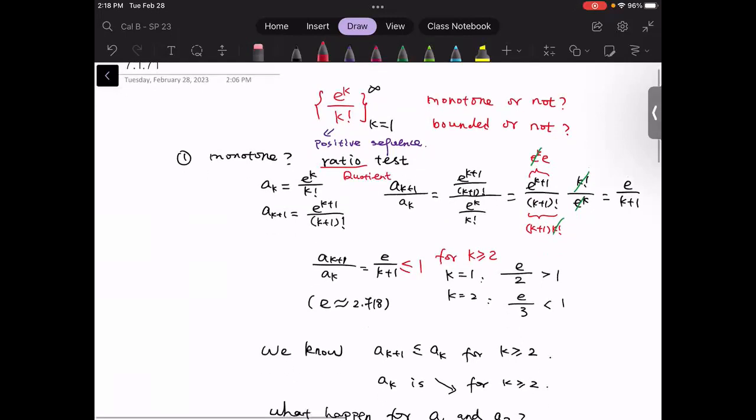Then we need to write down the definition of a_k and a_(k+1). Also, evaluate the ratio between them.